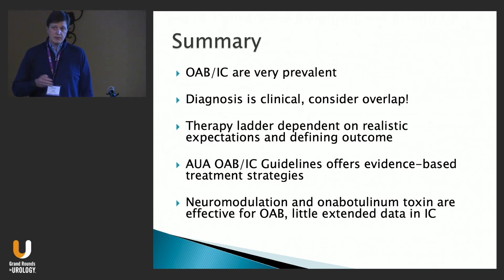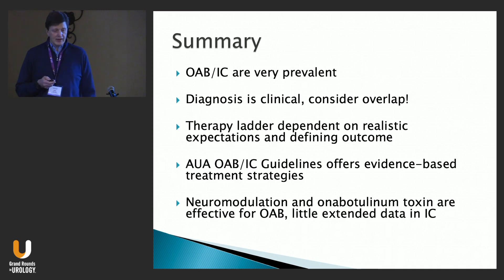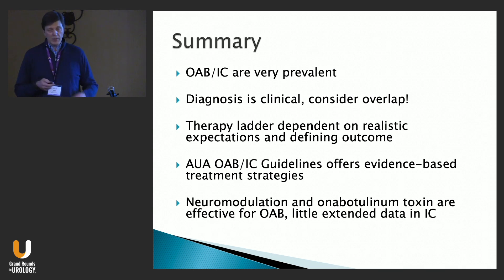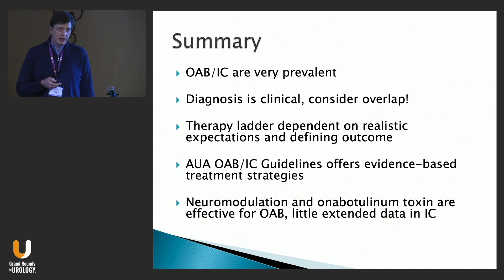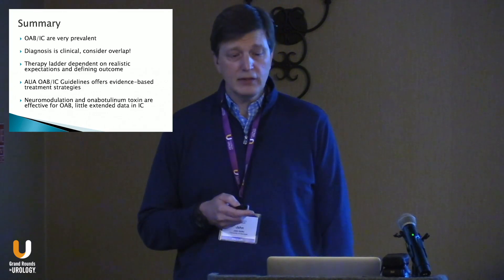In summary: these conditions are very prevalent. Think about your diagnosis in terms of sensory for interstitial cystitis and motor for overactive bladder, with some overlap. Use a therapy ladder for OAB and a grab bag approach for IC. Fall back on guidelines for evidence and guidance. For third-line therapy, there is more data supporting efficacy in OAB, but neuromodulation may be worth exploring for IC patients with urinary symptoms. Thank you.